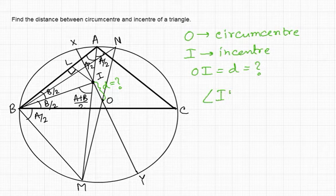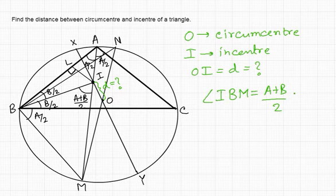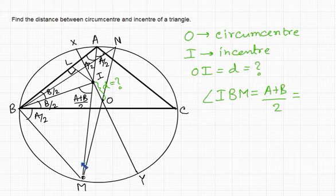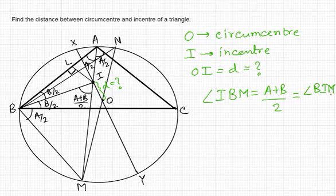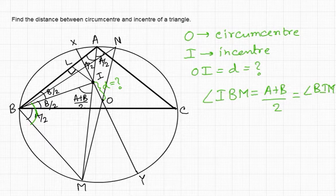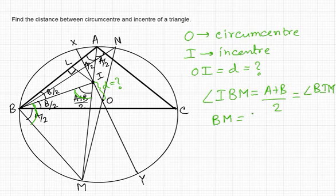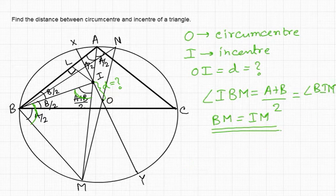Angle IBM works out to be (A + B)/2. Since the external angle equals the sum of the internal angles, angle IBM equals angle BIM. From this we can say that BM must equal IM, because the opposite angles are equal.